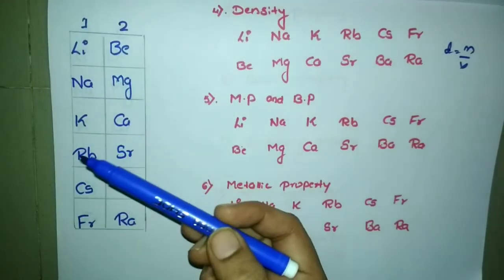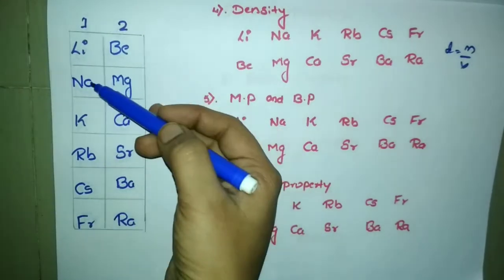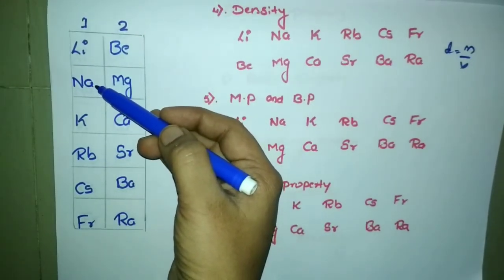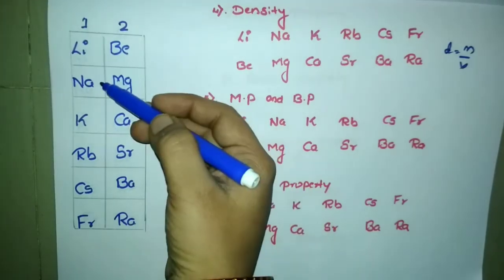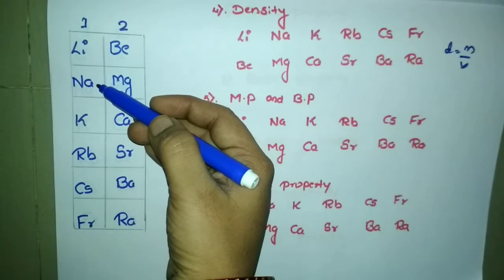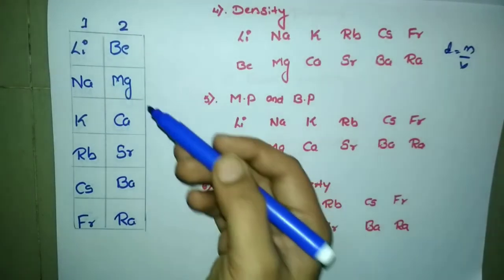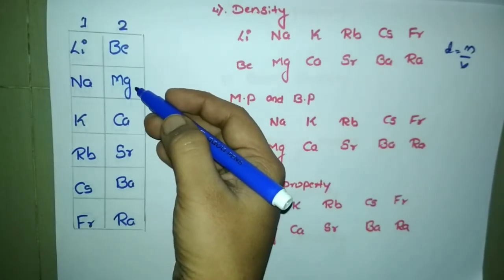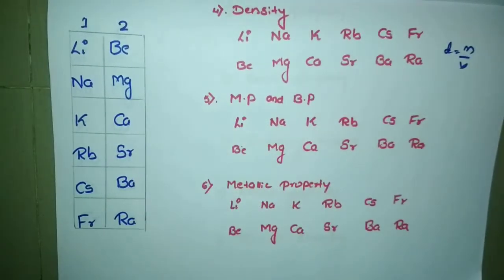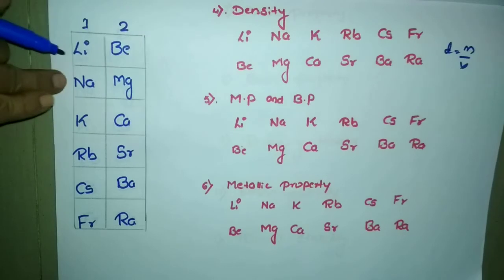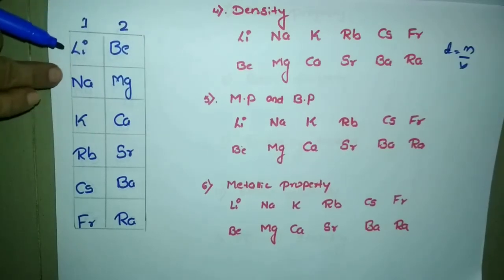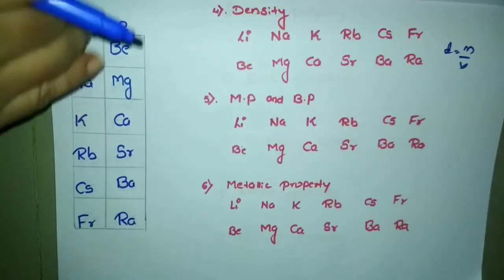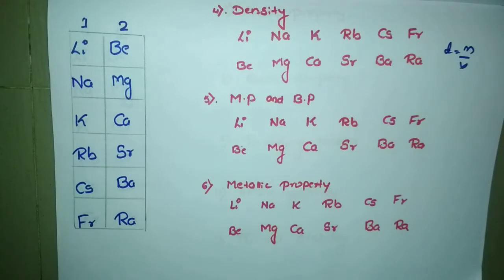According to the trend, sodium should be less dense than potassium as we go down the group. Similarly, magnesium should be less dense than calcium. But here there is a slight change: sodium is actually denser than potassium, and magnesium is actually denser than calcium. This raises the question — why does this happen?